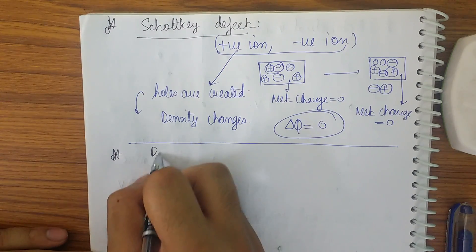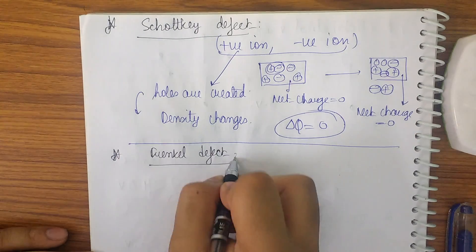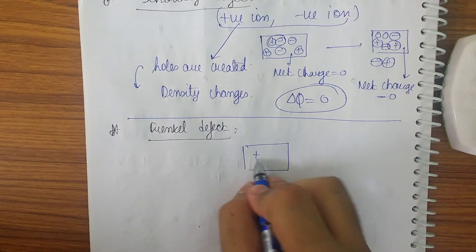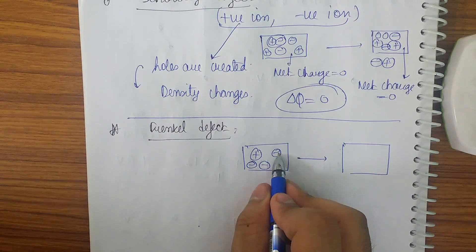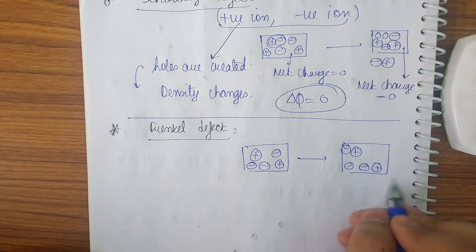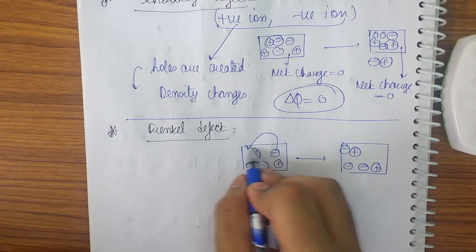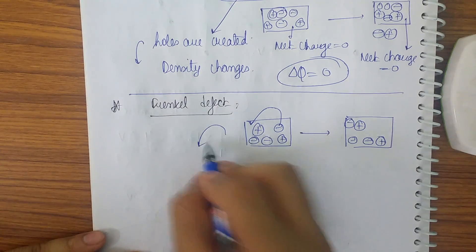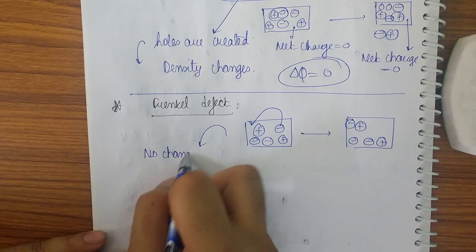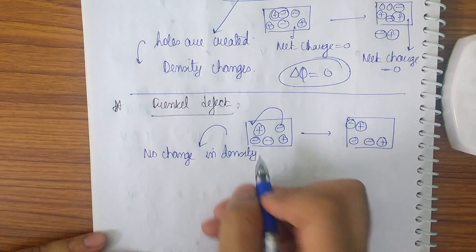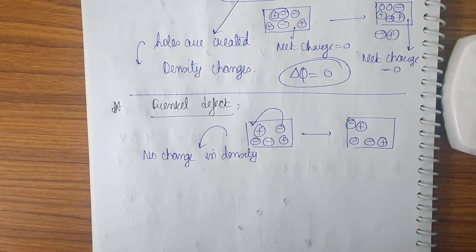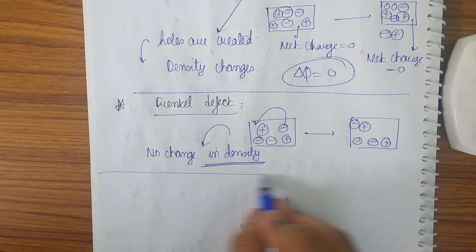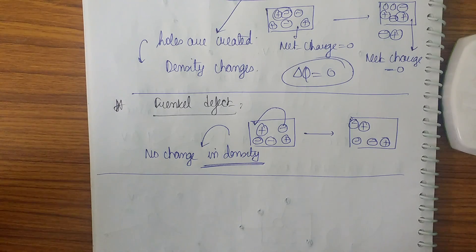The Frenkel defect occurs when an ion leaves its correct lattice position and moves to an interstitial site within the same cell. The position changes but the atom remains inside the crystal. Since the number of atoms remains the same, there is no change in density and no change in charge. This is the key difference from the Schottky defect.